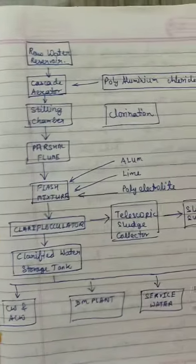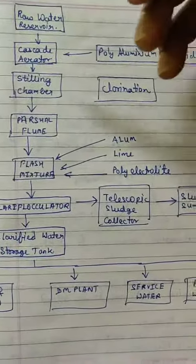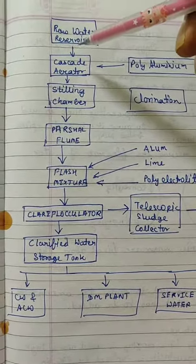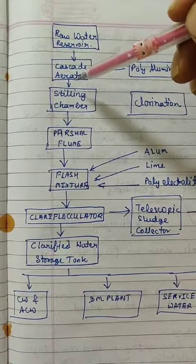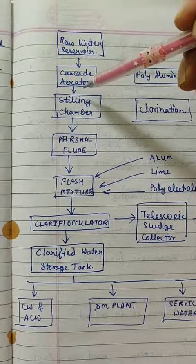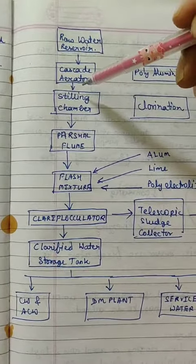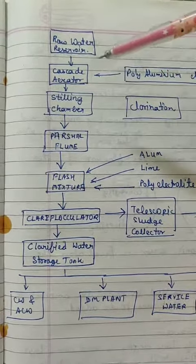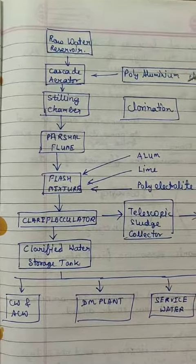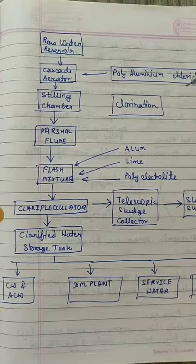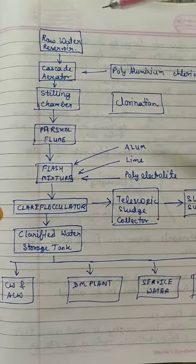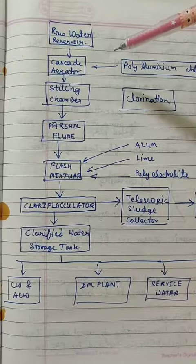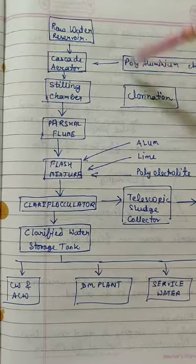Learning in brief: raw water comes from the reservoir. After the reservoir, it goes to a cascade aerator, which is a step-type fountain arrangement. From there, gases and impurities can be removed, and the water is then placed into a steel chamber.